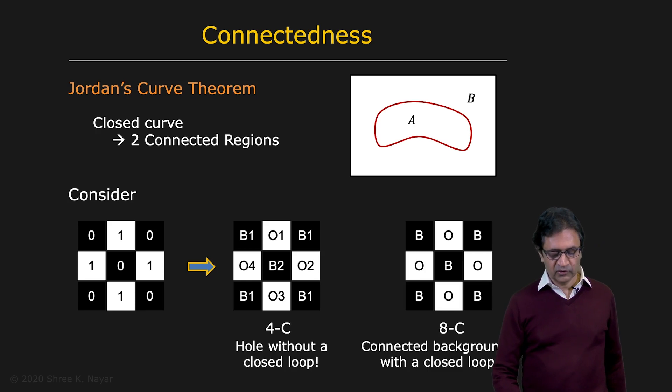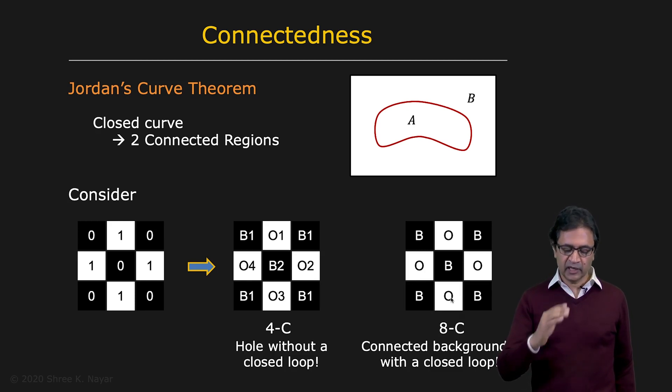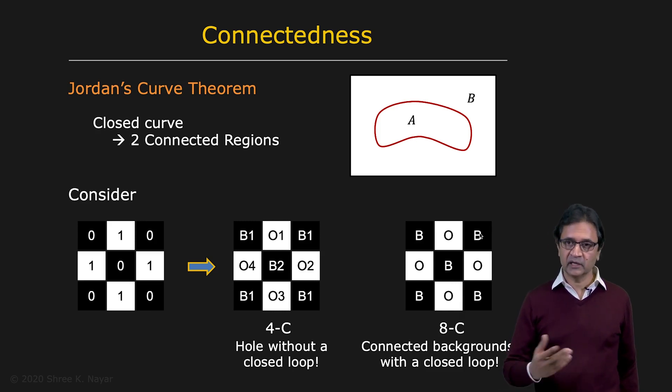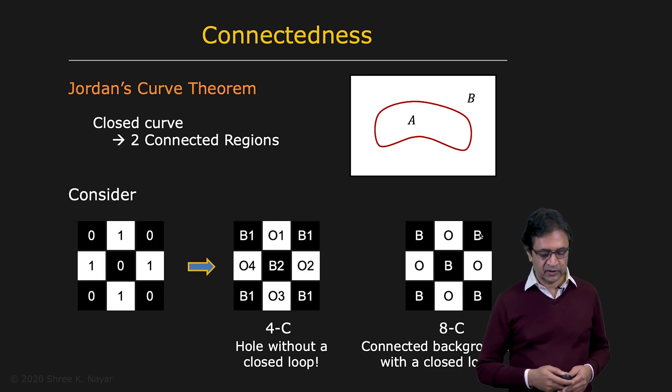Now, if you go to the eight connected definition, then you see that because it includes diagonal pixels as neighbors, these four ones are connected into one object. So this is taken to be a ring. And although it's taken to be a ring, a closed ring, interestingly, the background inside is connected to the background on the outside. That's not possible. That, again, violates Jordan's curve theorem.